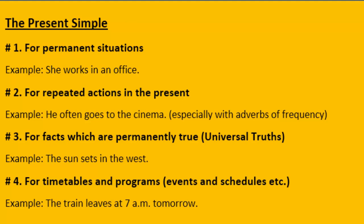Use number four: for timetables and programs — you may also call them events and schedules. Any action that is scheduled, which is in the timetable, or which is part of a program — even if it happens in the future — we use present simple for such actions. For example: 'The train leaves at 7 AM tomorrow.' Although this sentence belongs to the future, we still use present simple for it.